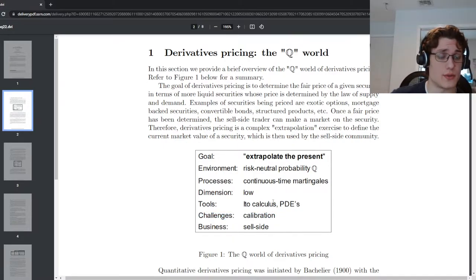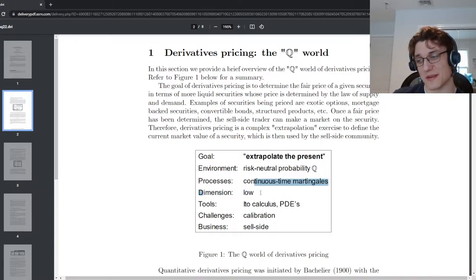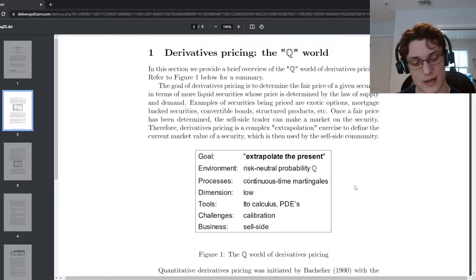So we're going to calibrate these models to the market implied volatility surface, and that's what they mean when they say the dimensionality is relatively low, because these models don't have that many parameters. We're not talking about hundreds of thousands of parameters. We're talking about like a Heston model where there are only a couple, a handful. And some models have fewer, some models have more, like a Sabre model is a very popular stochastic volatility model.